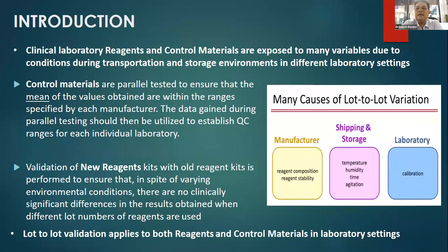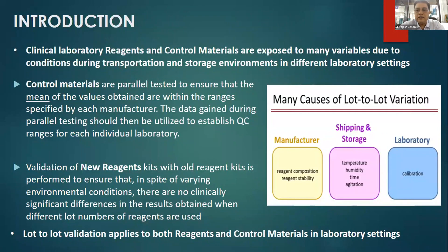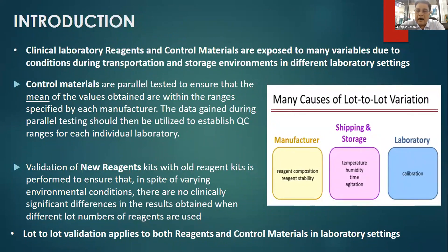The second question is why is it required and what are the reasons we need to do this? Controls or reagents come to us through our vendors and they go through a huge lot of sample transportation. During transportation, and when it reaches the lab, we need to maintain certain temperature and humidity conditions required for storage of that control or reagent. All these factors contribute to variability whenever a lot of a reagent or control changes.